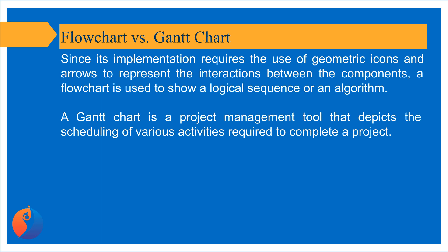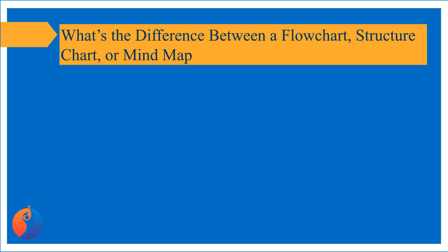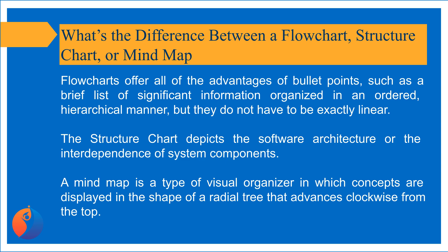Flowchart vs. Gantt chart: A flowchart uses geometric icons and arrows to represent interactions between components, showing a logical sequence or algorithm. A Gantt chart is a project management tool that depicts the scheduling of various activities required to complete a project. A structure chart depicts software architecture or the interdependence of system components. A mind map is a visual organizer where concepts are displayed in the shape of a radial tree that advances clockwise from the top.